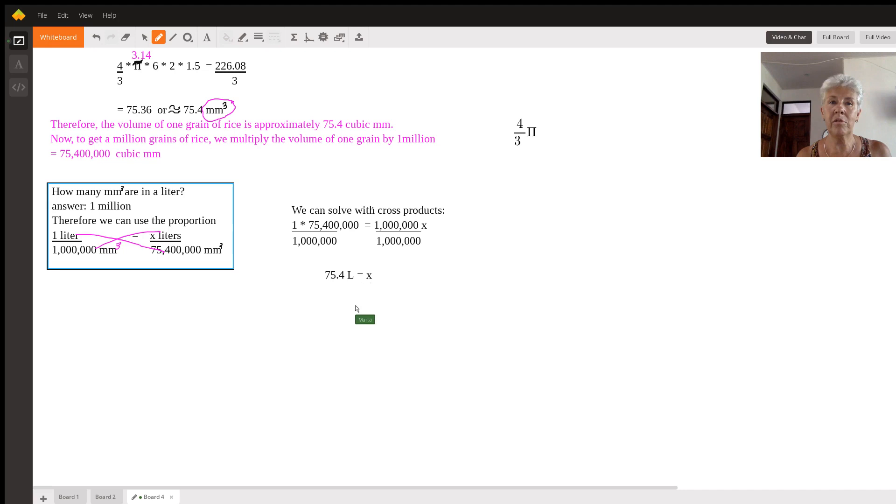If you think about those water stations that they have in lots of offices one of those containers on those big water stations is usually somewhere between 20 and 25 liters. So we'd need approximately three of those to put a million grains of rice in. Wow.